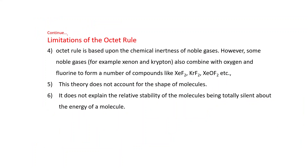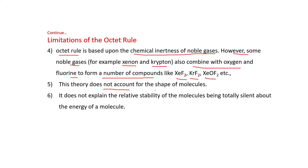Some more limitations of the octet rule: the octet rule is based upon the chemical inertness of noble gases. However, some noble gases — for example xenon and krypton — also combine with oxygen and fluorine to form a number of compounds like XeF₂, KrF₂, XeF₄, etc. This theory does not account for the shape of molecules, and it does not explain the relative stability of molecules, being totally silent about the energy of a molecule. These are the limitations of the octet rule.